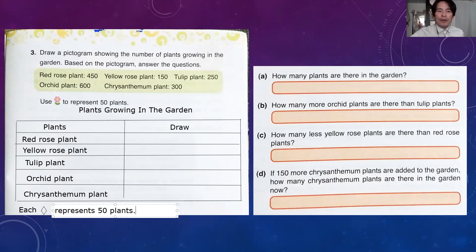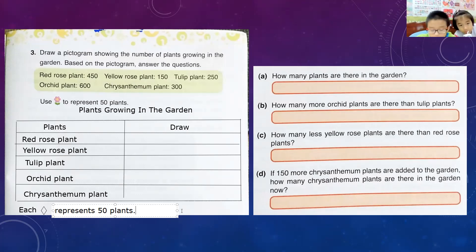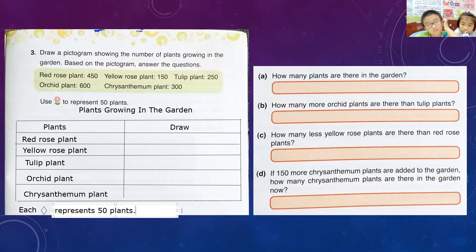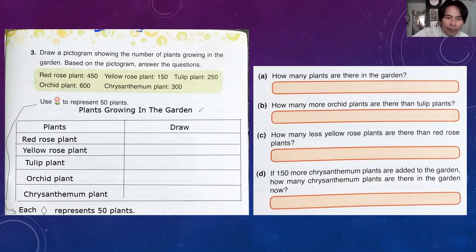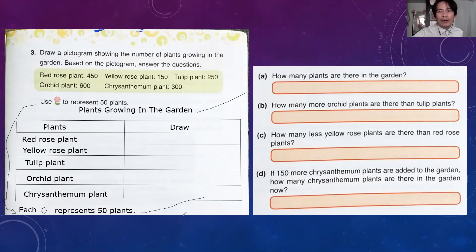MK used a flower to represent 50 plants. You need to draw the key again below the table because that's the rule — you get one point for the title and another point for writing the key at the bottom, even if it's already in the textbook. Red rose plant has 450, so I'm going to draw nine diamonds.